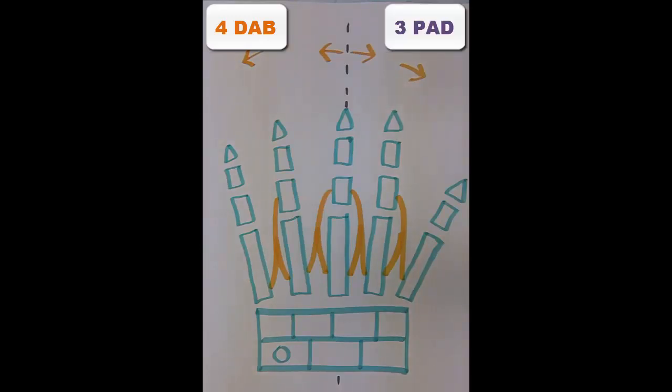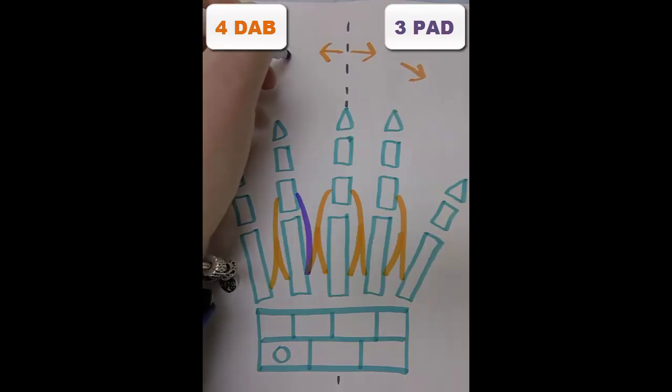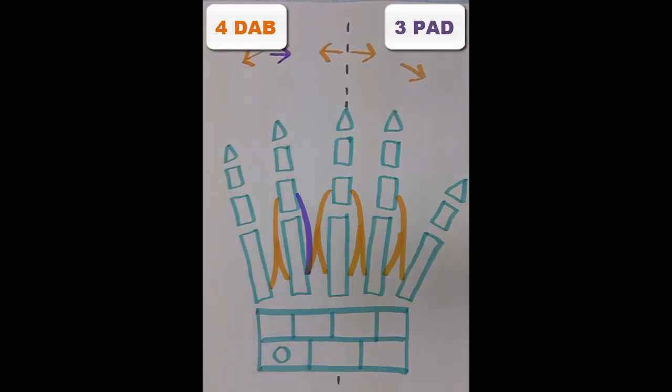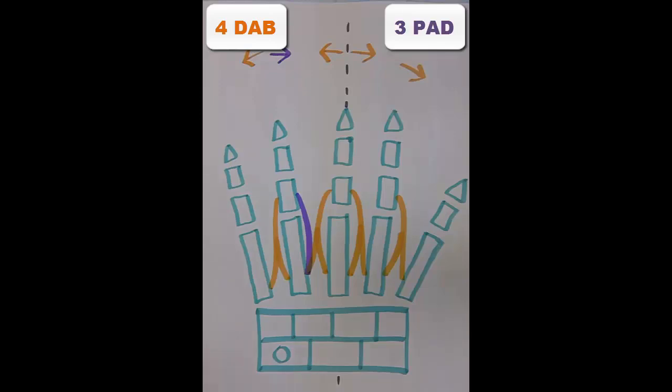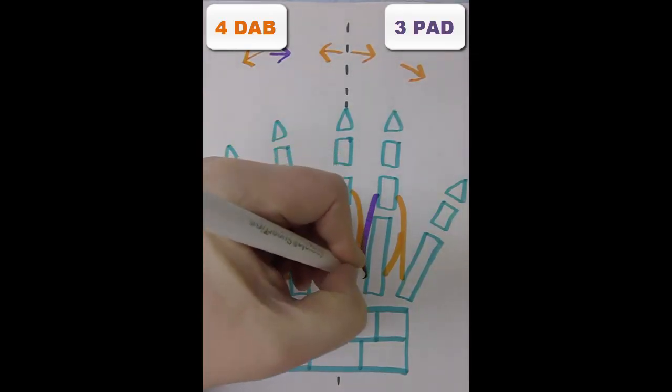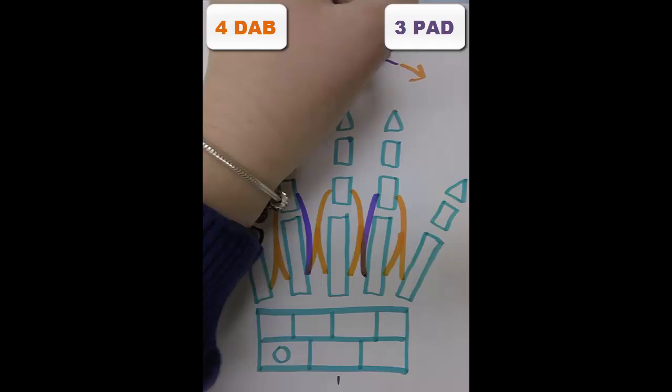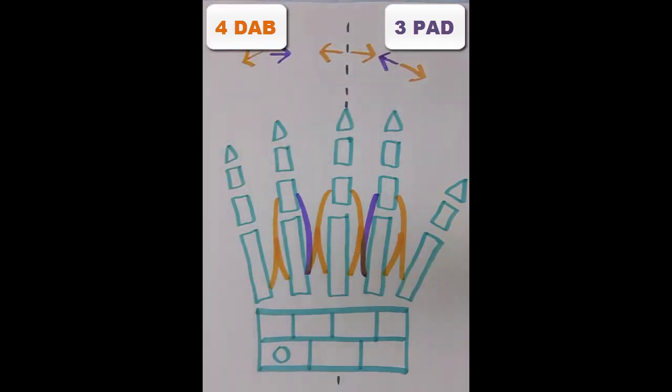Now we're going to go ahead and add our three palmar adductors. We don't have anything for the middle finger. We'll start by adding one for the ring finger, bringing the fourth digit back towards the midline. We have one for the second digit. And we have one for the fifth digit.